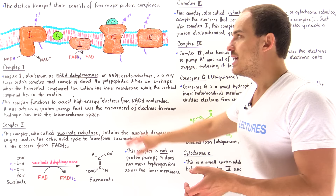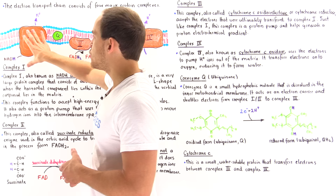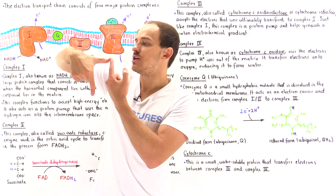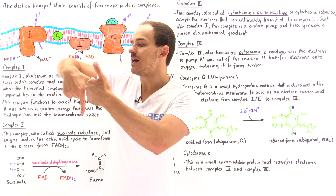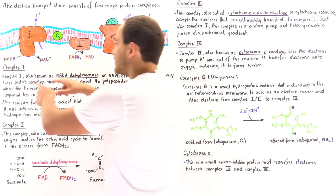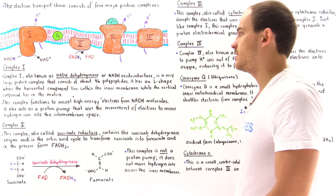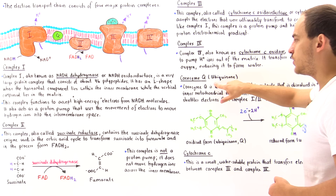This complex is actually very large — it consists of about 46 individual polypeptide chains. If we examine the shape of protein complex 1, we'll notice that it looks like the letter L, which contains a horizontal component and a vertical component. The vertical component is exposed to the matrix of the mitochondria, while the horizontal component lies entirely within the inner membrane. The function of protein complex 1 is to accept those high-energy electrons from NADH molecules and move them along a special pathway within the complex, ultimately transferring them onto the electron carrier molecule coenzyme Q ubiquinone.